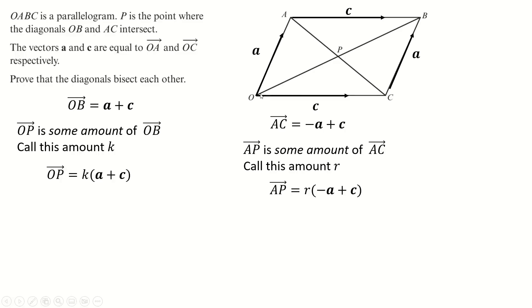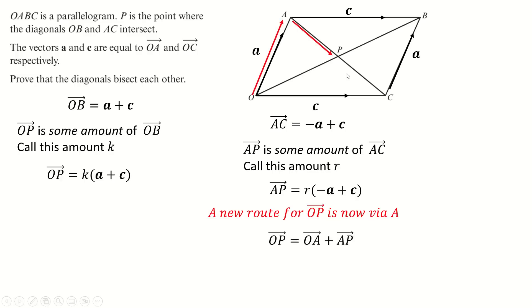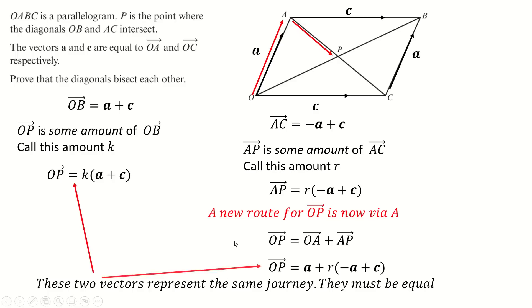Now this is where pathfinding is important. I've got one journey representing O to P and I want to find another one. What if I went via A — up to A and then down to P? That would be A plus A to P, which I've just described. That gives another representation for O to P. Vectors don't care how you get somewhere; as long as you start in one place and end in another, it's always the same. So A plus R(−A + C) is another representation for O to P, and those two expressions must be equal.